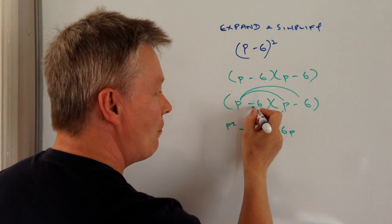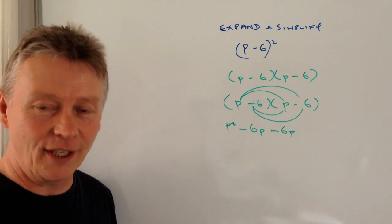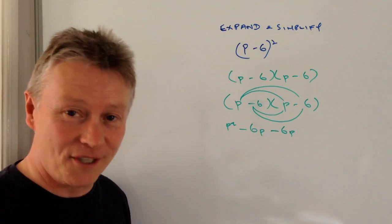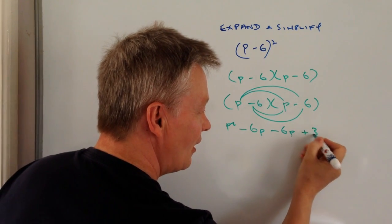And I've got minus 6 times minus 6. Now you need to be really careful here because a minus times a minus is a positive. So it'll become 6 times 6 which is plus 36.